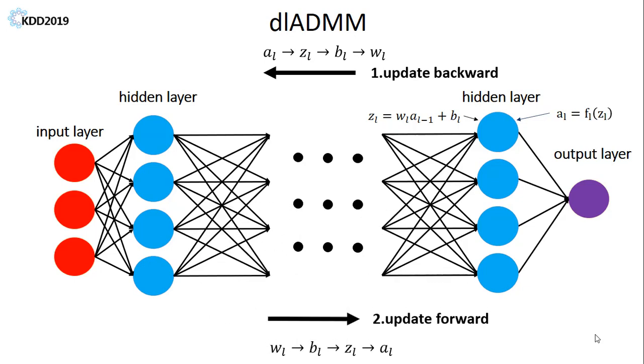In the second step, DL-ADMM reverses the update direction, beginning at the first layer and moving forward to the final layer. The parameter information for all layers can be exchanged completely by adopting this update approach, which speeds up the convergence process.